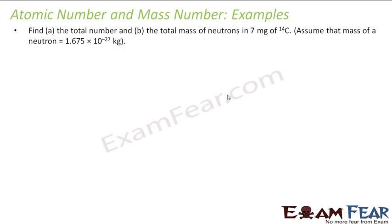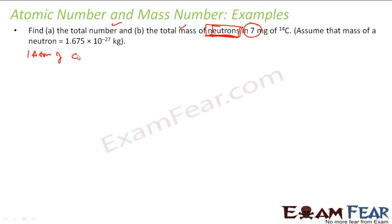Next, find the total number and total mass of neutrons in 7 milligrams of Carbon-14. Note: we are looking only for neutrons. First, let's find how many neutrons one atom of Carbon-14 has. Neutrons = atomic mass − atomic number = 14 − 6 = 8 neutrons.